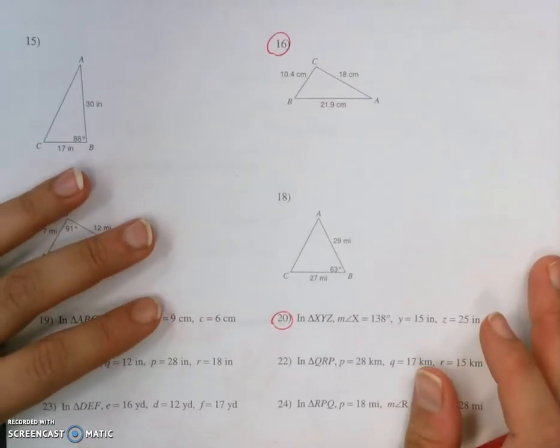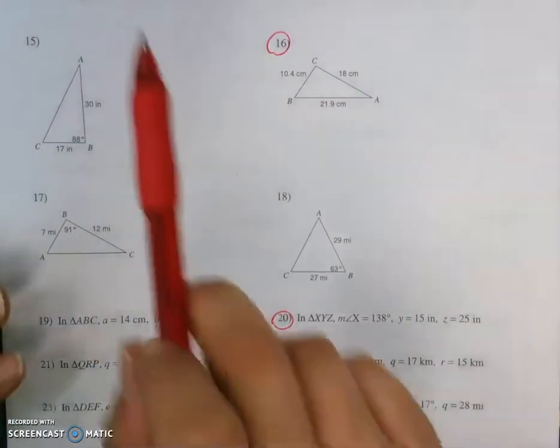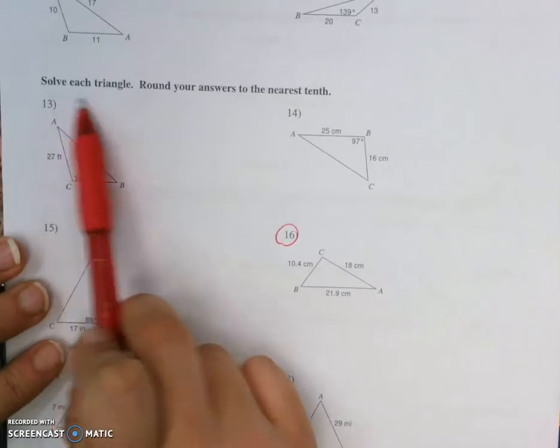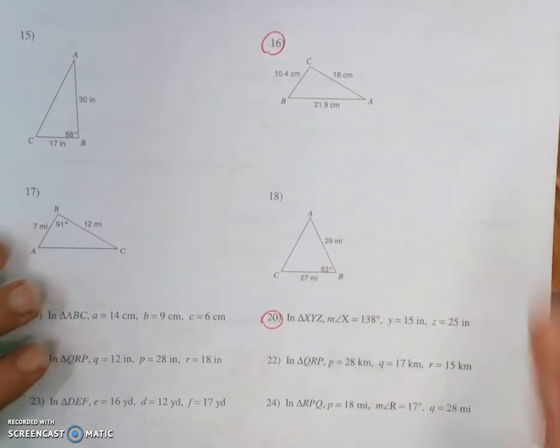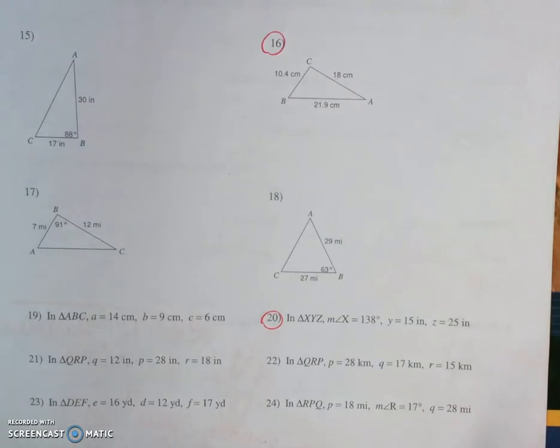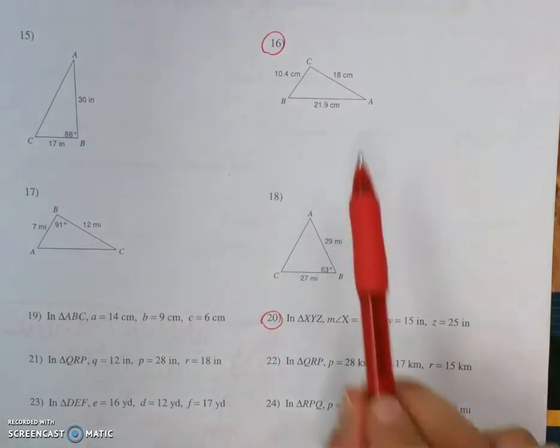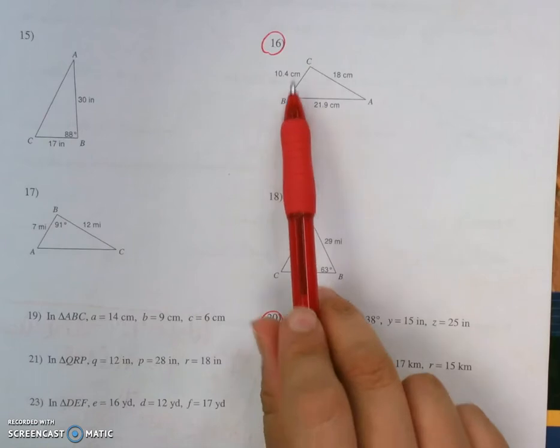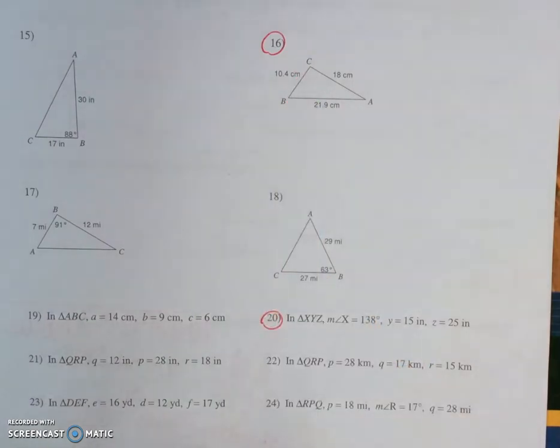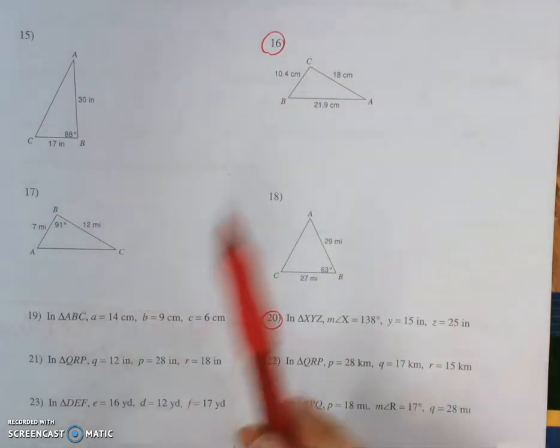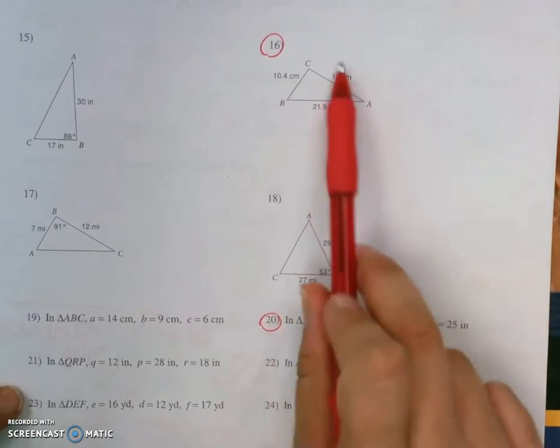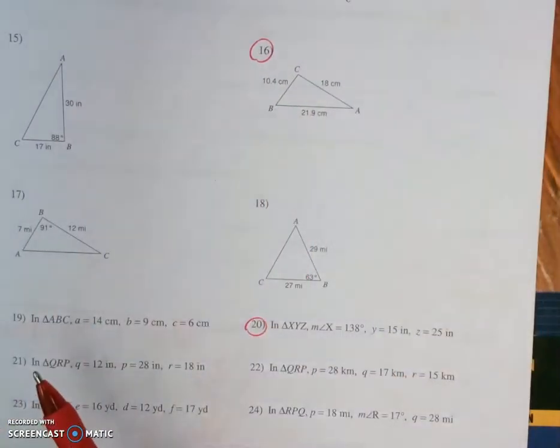Number 16. So on this one, it says to solve each triangle, round your answer to the nearest tenth. Solving the triangle just simply means to give any of the unknowns. So we want to find out angle A, angle B, and angle C for this problem. We cannot use law of sines because we don't have a perfect pair anywhere. So law of cosines is our only option.